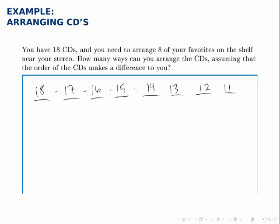And you can multiply all these numbers together to find out how many ways there are to arrange 8 of these 18 CDs in order. If you multiply these together, you'll get 1,764,332,560 possibilities.